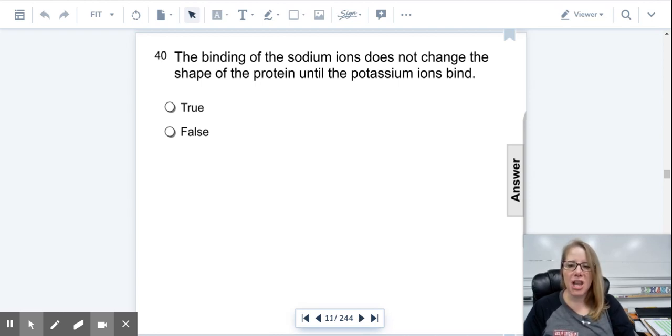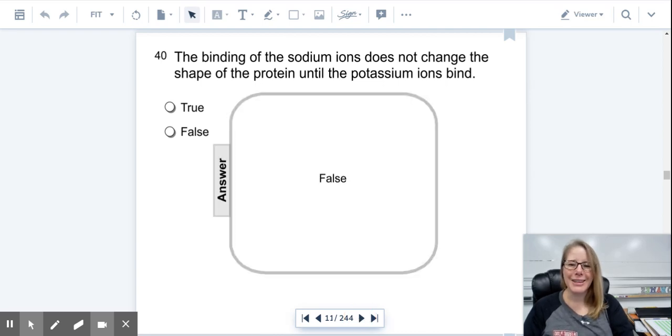The binding of sodium ions does not change the shape of the protein until potassium ions bind. True or false? False. Good. It changes when the phosphorus is attached and allows that to happen.